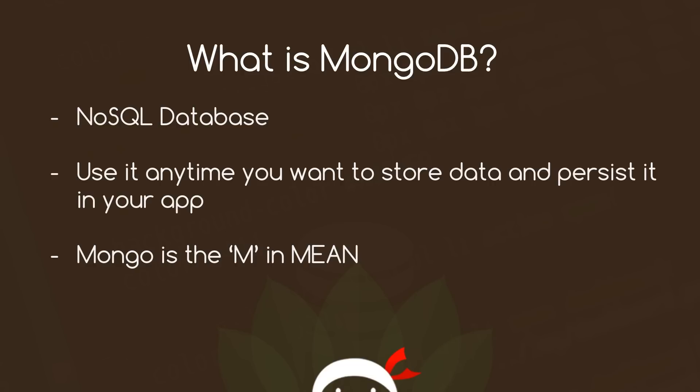Mongo is the M in the MEAN acronym. So you've probably heard about the MEAN stack — Mongo is the M, Express is the E, Angular is the A, and Node.js is the N. And these are interchangeable by the way.